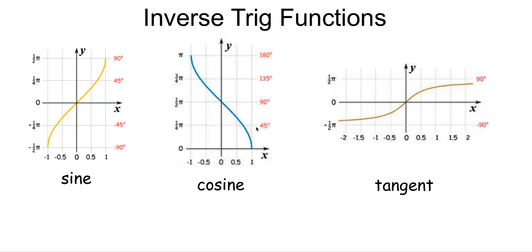In this video, we're going to talk about inverse trig functions and why inverse trig functions are restricted to certain areas of the unit circle, certain quadrants. I have the three main trig functions and their inverses here as graphs. This yellow curve is the inverse sine, this blue one is the inverse cosine, and this mustard-colored one is the inverse tangent.